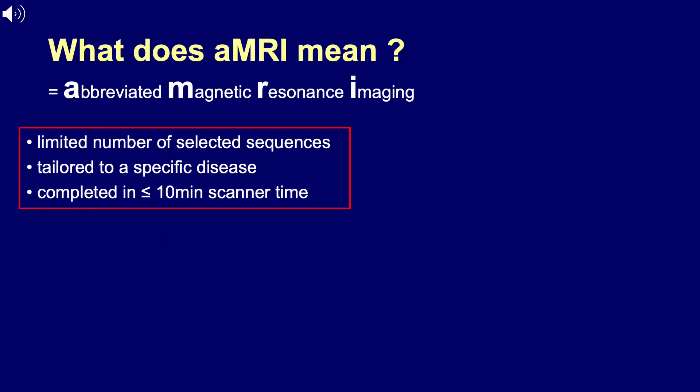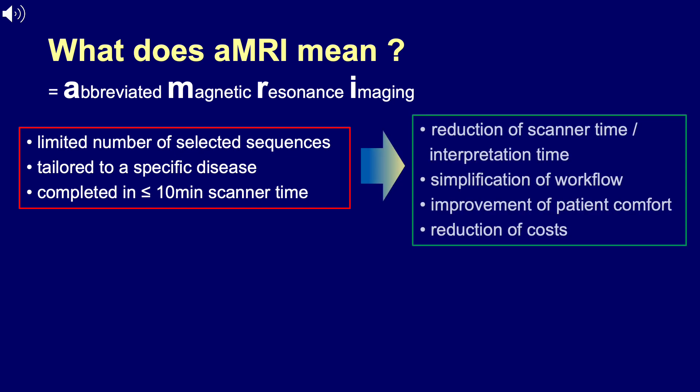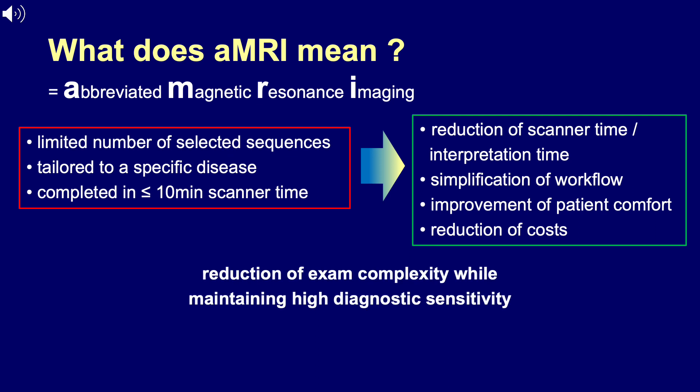Abbreviated magnetic resonance imaging, also known as AMRI, relates to the acquisition of only a limited number of selected sequences tailored to a specific disease. A defining hallmark of these protocols is that they may be completed in a scanner time of approximately 10 minutes or less. Main motivations include reduction of scanner time, interpretation time, simplification of workflow, improvement of patient comfort, and reduction of imaging costs. In summary, abbreviated MRI aims towards reduction of exam complexity while maintaining a high diagnostic sensitivity.